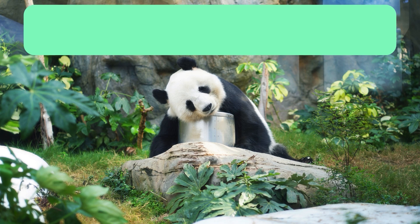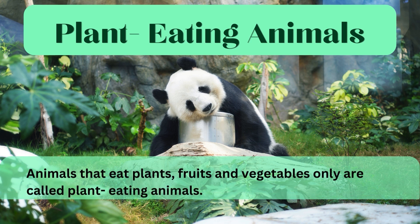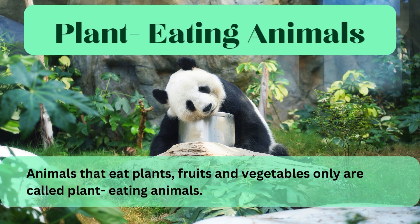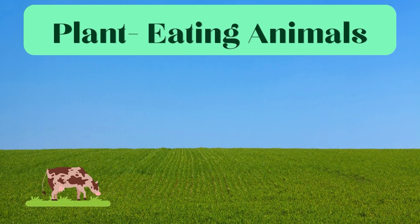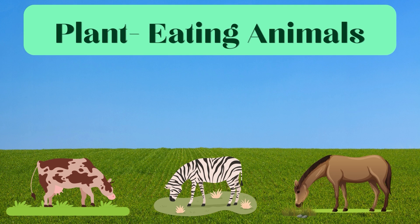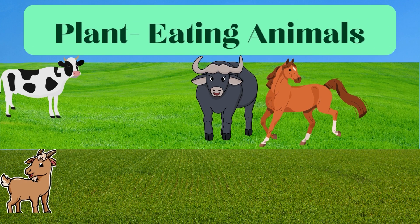Plant-eating animals. Animals that eat plants, fruits, and vegetables only are called plant-eating animals. These animals have flat front teeth and strong, flat grinding teeth at the back, which help them in chewing grass and leaves. Animals like cow, buffalo, goat, horse, and elephant are some examples.